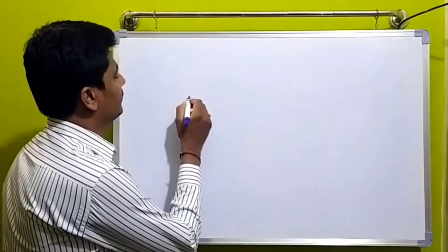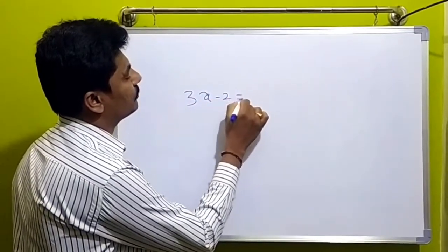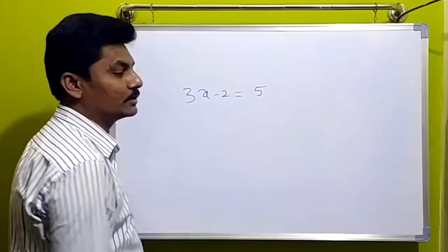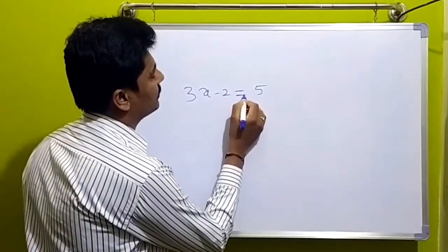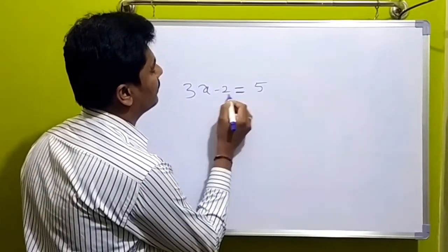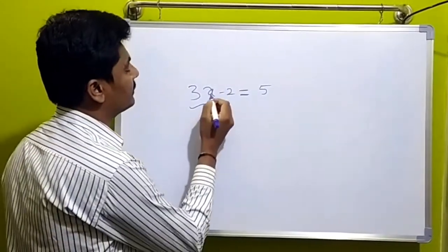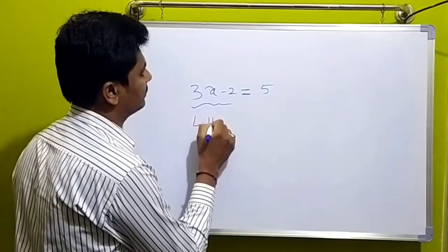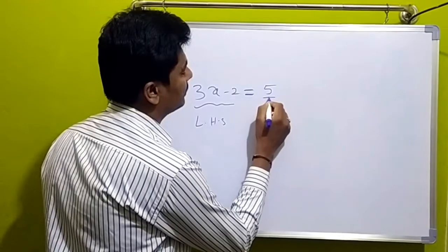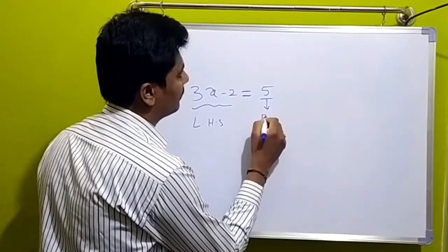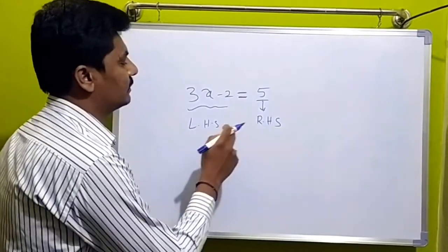Let me show you the equation. 3x minus 2 is equal to 5. This is the equality symbol. The left-hand side is L-H-S, and the right-hand side is R-H-S. So, it is L-H-S and R-H-S.